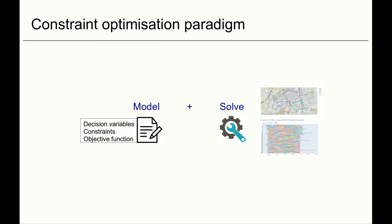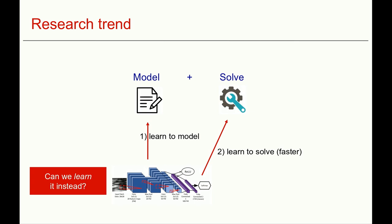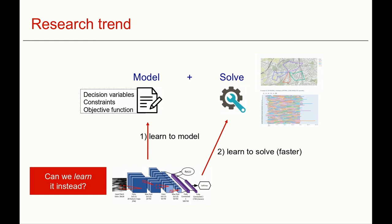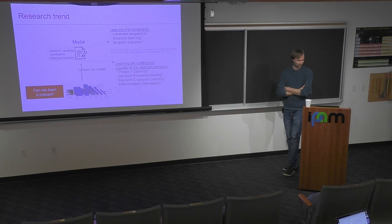The two big trends in AI and in this seminar series are to use machine learning either to learn part of the problem specification or to learn to solve faster. I will focus on the left part — that's what we do in our lab — mostly ways of using learning to improve the problem specification.